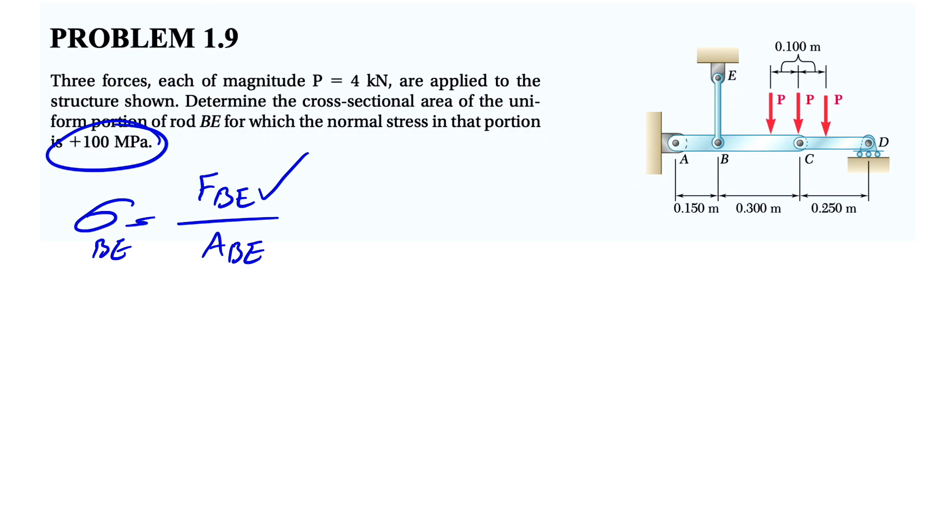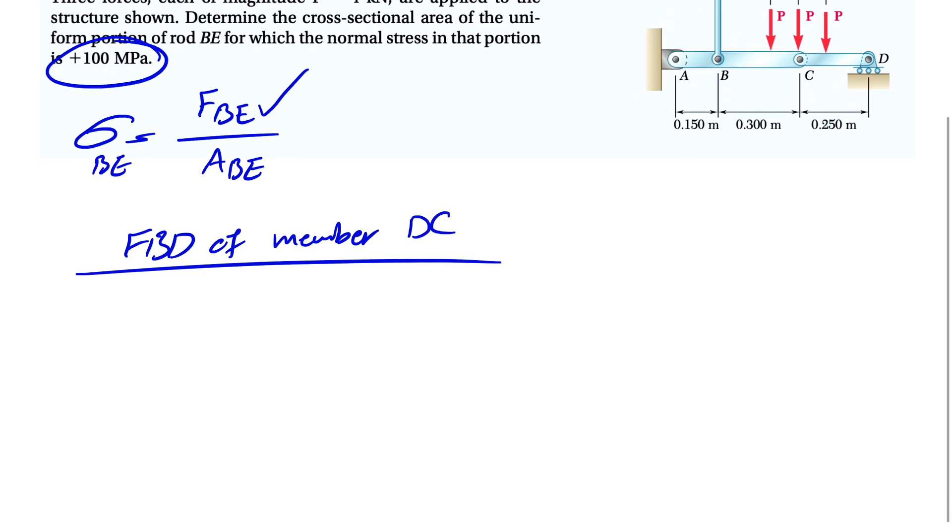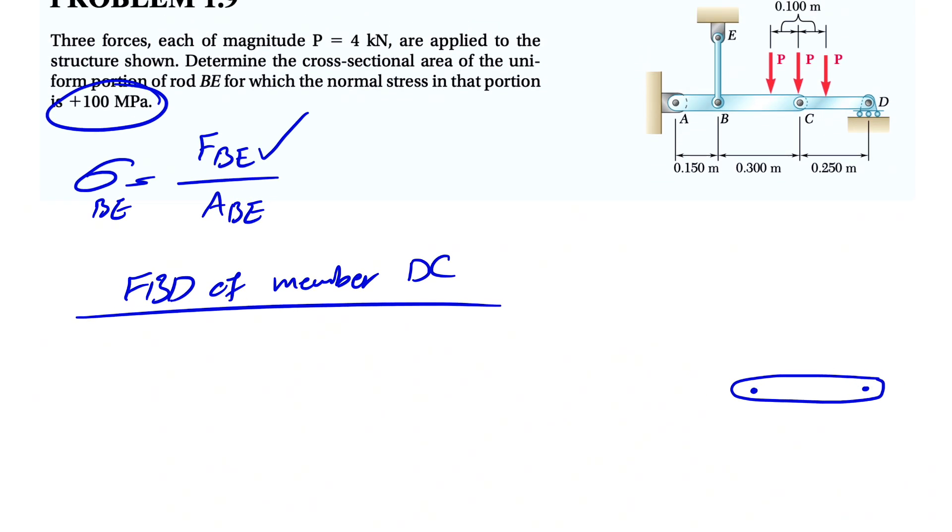We have to go through different members of this structure in order to find the answer. What we're going to solve is we're going to start with the free body diagram of member DC, which sounds the easiest member in here. We have the point D and C. If we look at this, we'll see that we have a roller at point D, which means we only have a normal force.